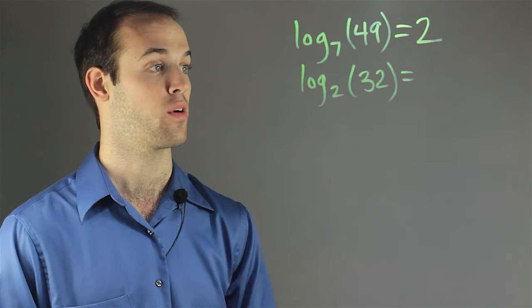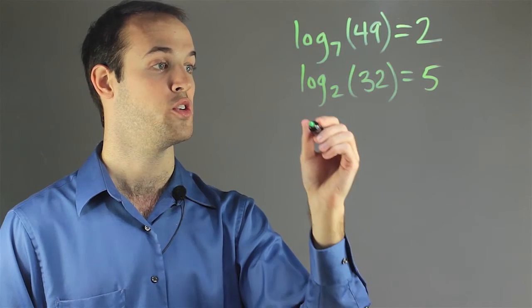And this would be to the power 5. So log base 2 of 32 is equal to 5.